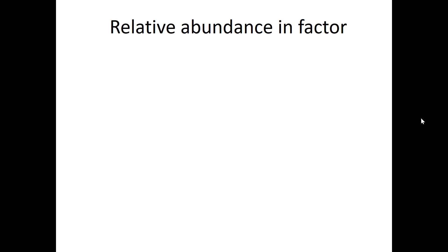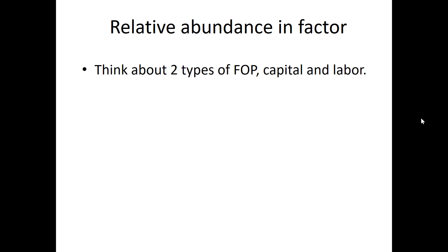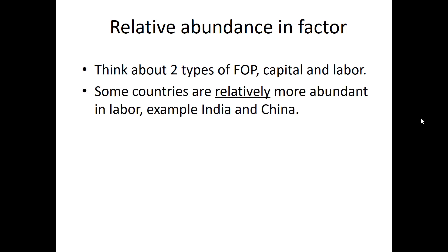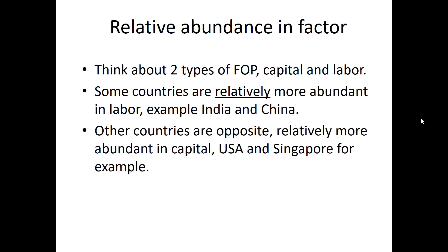What do we mean by relative factor abundance? Think about two factors of production: capital and labour. Some countries, because of their large population size, are classified as relatively more labour abundant — such as India and China, which have huge population sizes. On the other hand, countries like the United States and Singapore are classified as relatively more capital abundant. Singapore's population is small and limited, so it is more accurate to classify Singapore as relatively capital abundant rather than labour abundant.